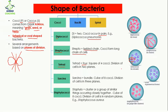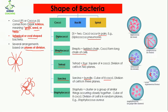Then comes sarcina. Sarcina means bundle. When a cube of eight cocci is present, it is known as sarcina. You can see four cocci in the front and four at the back. The division of cell is three planes — one, two, and then three at the back — so it is like a bundle.